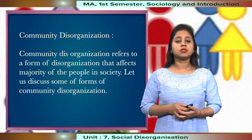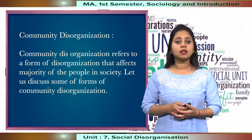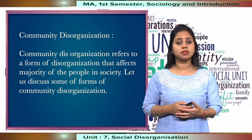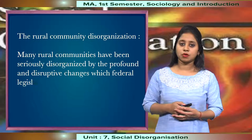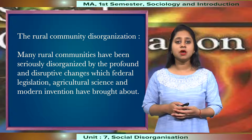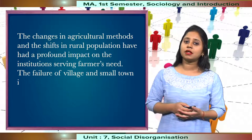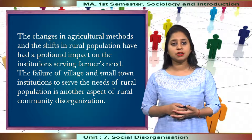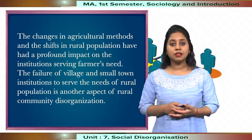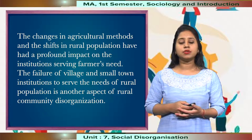The third type is community disorganisation, which refers to disorganisation that affects the majority of people in a particular society. Rural community disorganisation is one form — many rural communities have been seriously disorganised by profound and disruptive changes brought about by federal legislation, agricultural science, and modern inventions. The failure of village and town institutions to serve the needs of the rural population is another aspect of this.